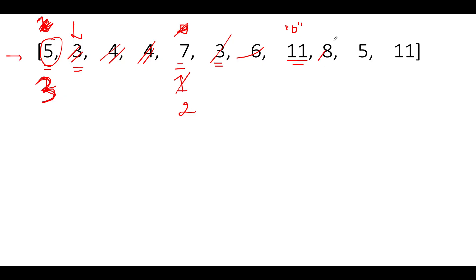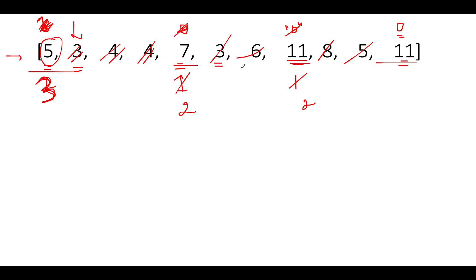Next we see 8 - 8 gets deleted by virtue of 11, so the count gets updated to 1. Next we see 5 - 5 is lower than 11, the count gets updated to 2. Next we see 11 - 11 is equal to 11, so we are not going to do anything, and the count gets updated to 0. We are done with the iteration. So out of all these counts for 5, 7, 11, and 11, the maximum one happens to be 3, and therefore it becomes the answer. So a pretty simple and straightforward technique - it can easily be solved using a stack approach. But there is a catch.